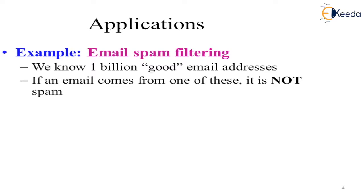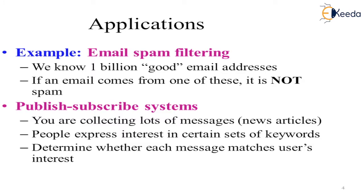Applications of filtering streams include email spam filtering. If we know one million good email addresses and an email comes from one of them, it is not spam; if it is not from this list we can categorize it as spam. Another application is publish-subscribe systems — we visit news articles and subscribe with our email ID, and continuously receive emails. The system collects messages and sends emails based on keywords matching users' interests.